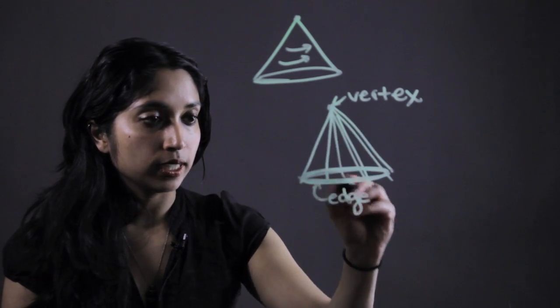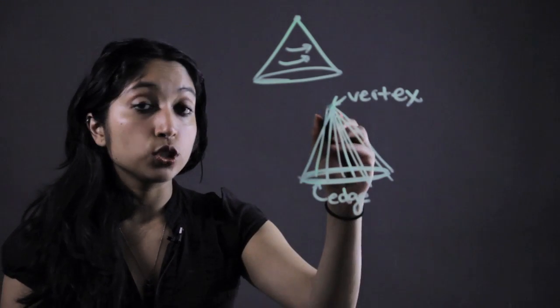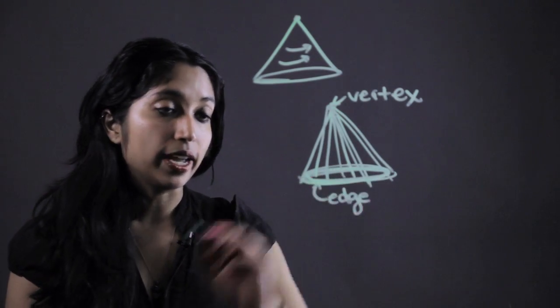All the little lines that connect the two are going to make up our cone, but the two things that define it are the vertex and our edge.